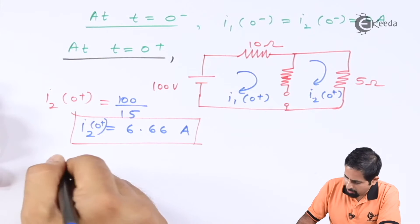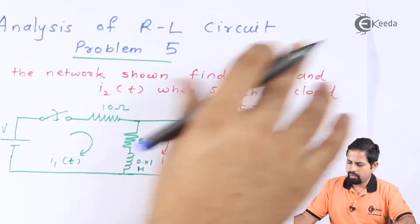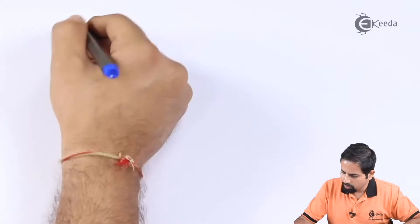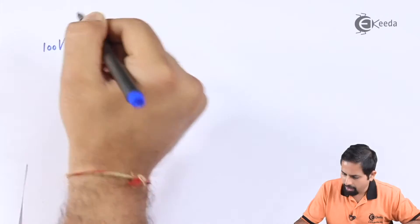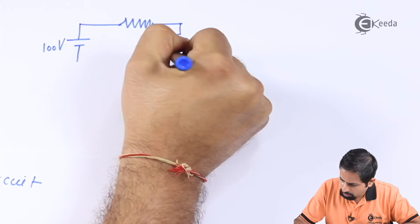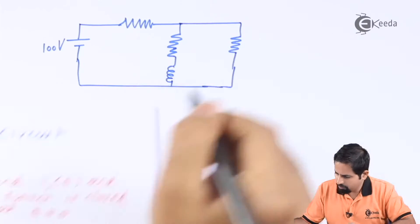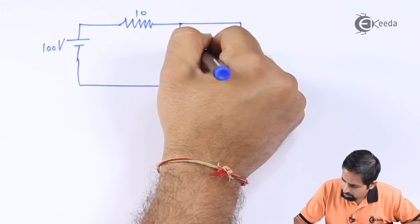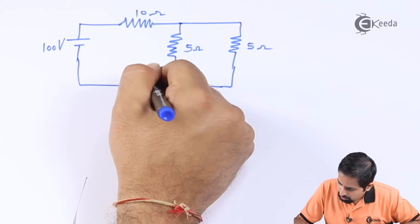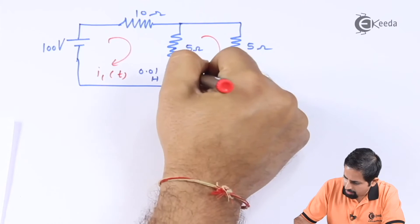Now for t greater than 0, we go to the original circuit. The resistances are always present, and now the inductor is in the picture. The circuit has a 100 volt source with resistors of 10, 5, and 5 ohms, and an inductor of value 0.01 Henry. I1(t) and I2(t) are as marked.